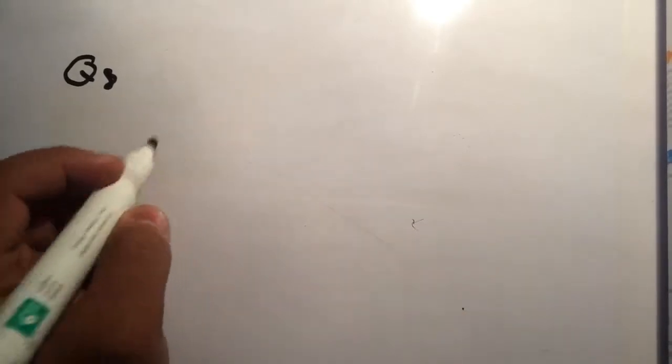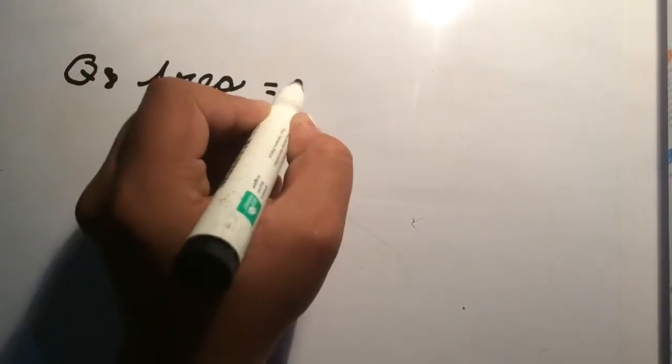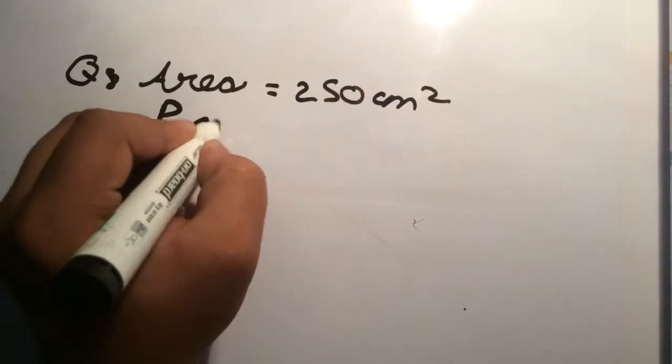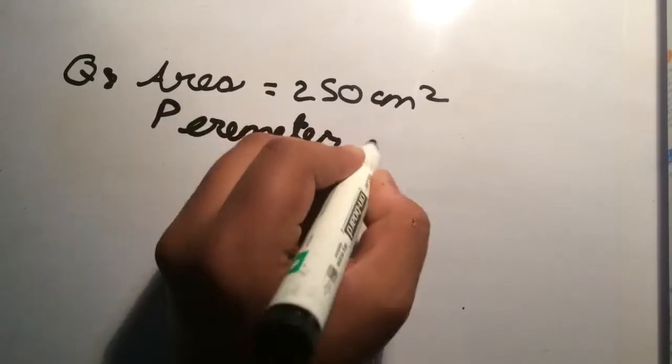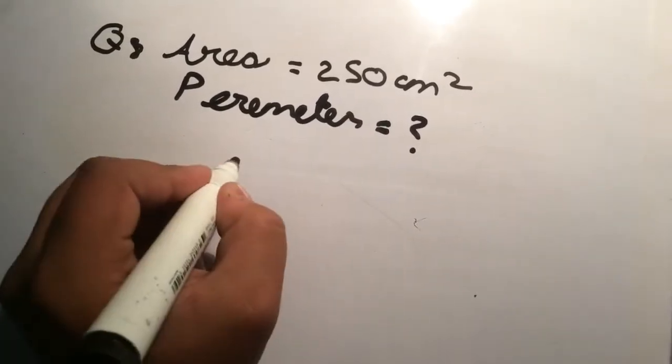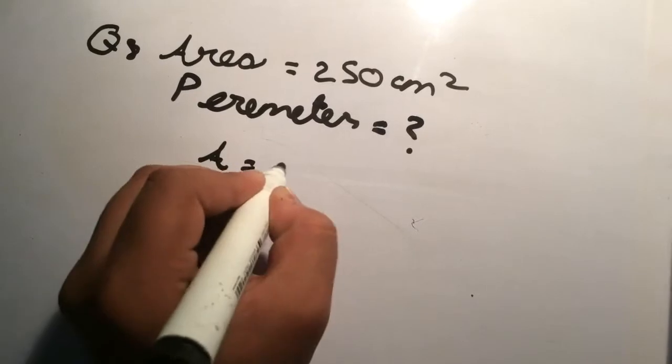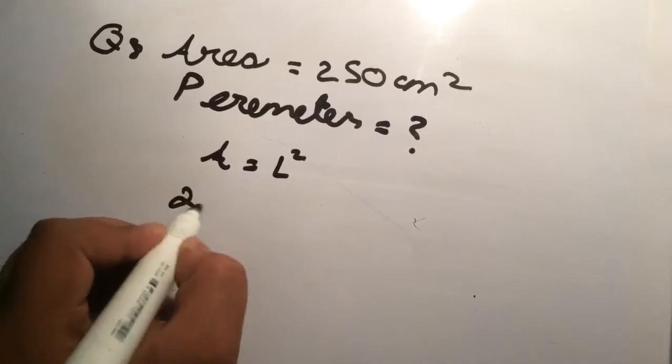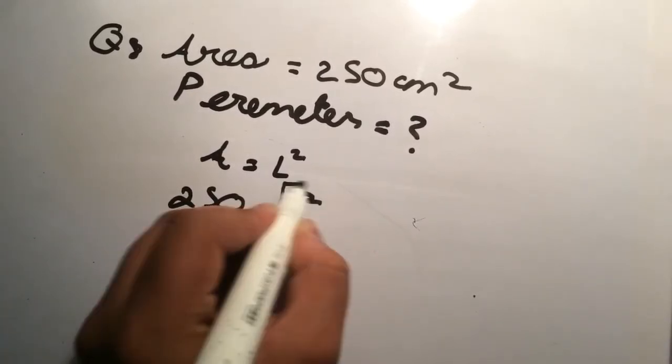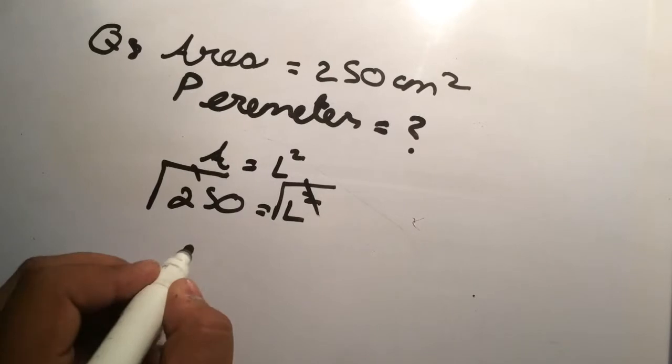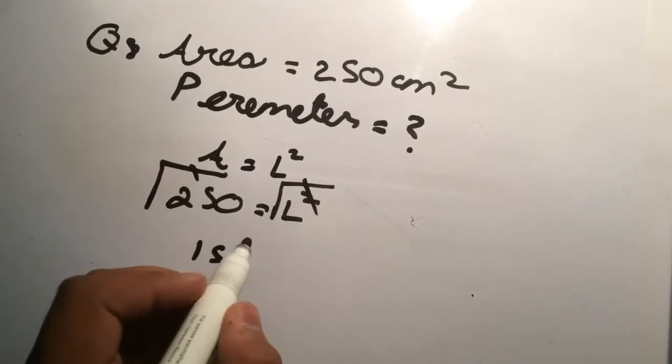So guys, area is 250 centimeter square and perimeter is unknown. So what we will do is write area equals to L square, which is the area of square. So area is 250 equals L square. Here we will get the square root on both sides and give the answer of 15.81 according to two decimal places.